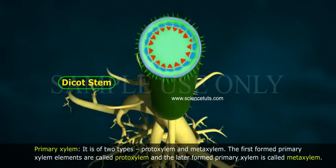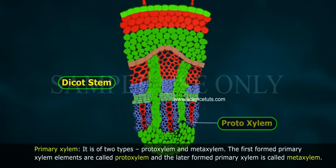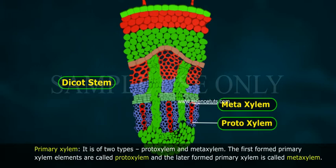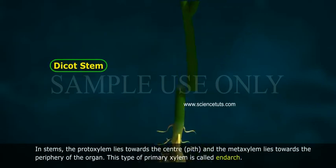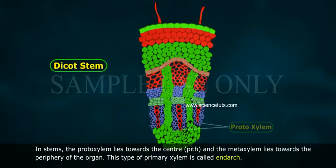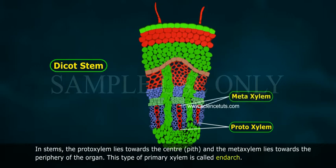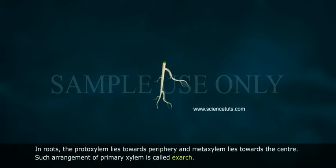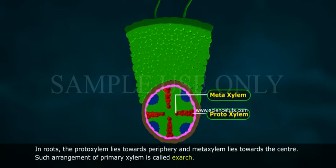Primary xylem is of two types: proto xylem and meta xylem. The first formed primary xylem elements are called proto xylem, and the later formed primary xylem is called meta xylem. In stems, the proto xylem lies towards the centre or pith, and the meta xylem lies towards the periphery — this type is called endarch. In roots, the proto xylem lies towards the periphery and meta xylem towards the centre, called exarch.